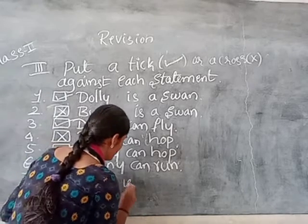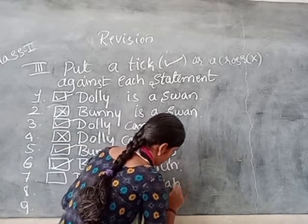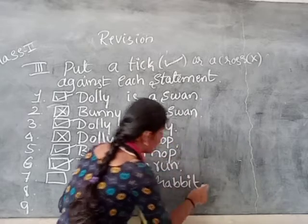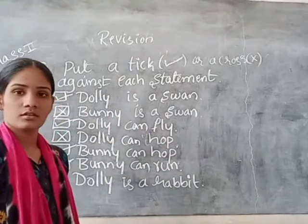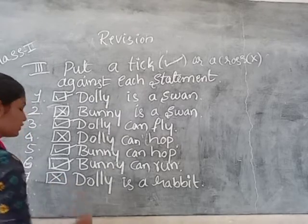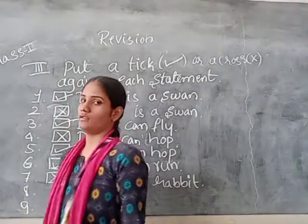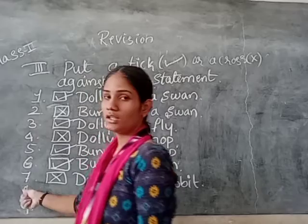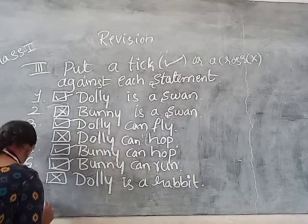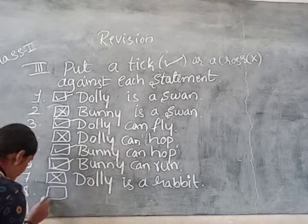Next: Dolly is a rabbit. Is Dolly a rabbit? No. Dolly is not a rabbit — it is a swan. So it is wrong.